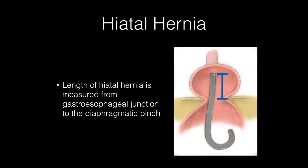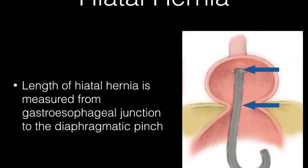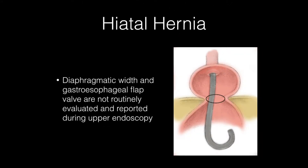Gastroenterologists routinely describe axial displacement of the stomach to define the presence of a hiatal hernia. Axial displacement or length of hiatal hernia is routinely measured as the distance between the gastroesophageal junction to the diaphragmatic pinch. Although all gastroenterologists routinely perform examination of the gastric fundus in a retroflexion view, assessment of diaphragmatic width and gastroesophageal flap valve is not routinely reported during upper endoscopy.